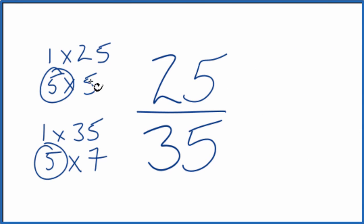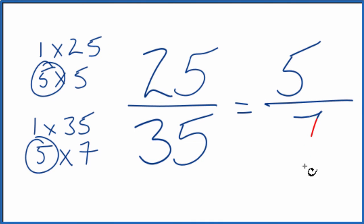So 25 divided by five gives us five, and then 35 divided by five is seven. We've simplified 25 35ths down to five sevenths, and we can't reduce or simplify five sevenths any further.